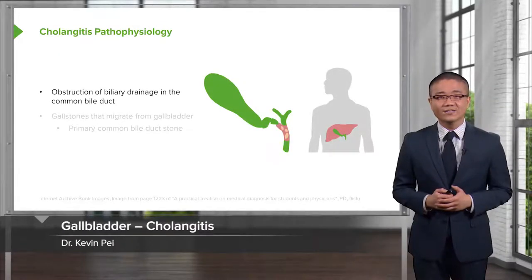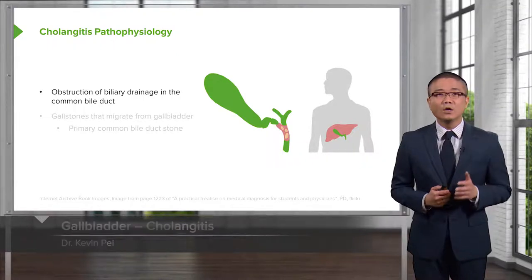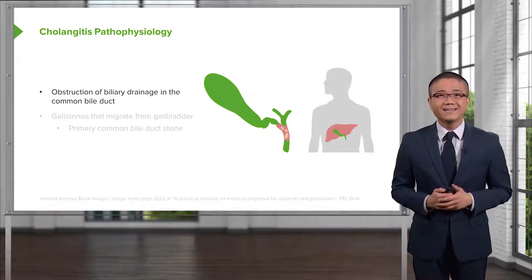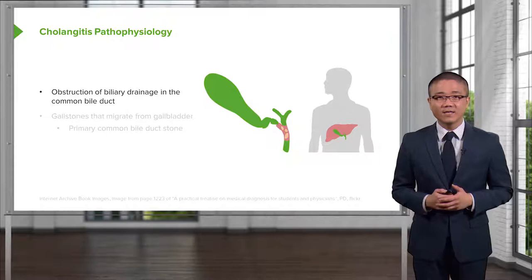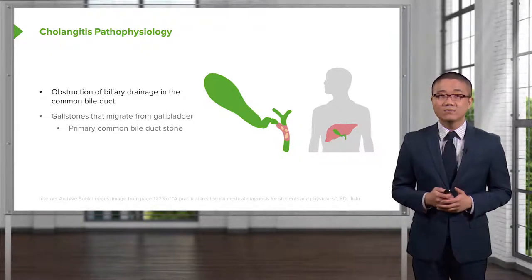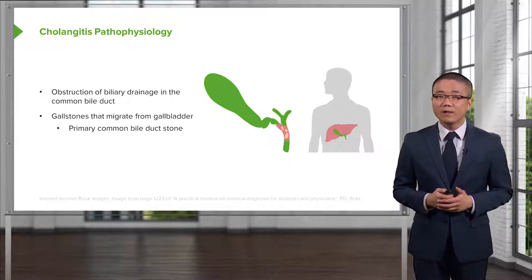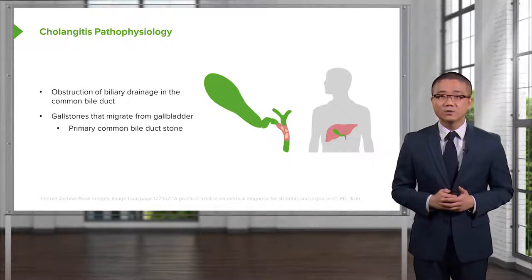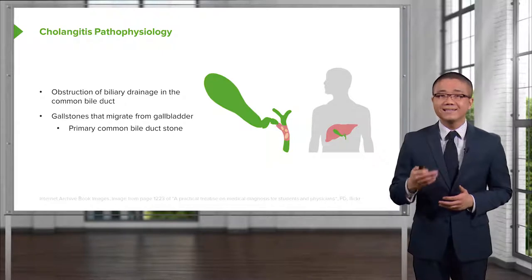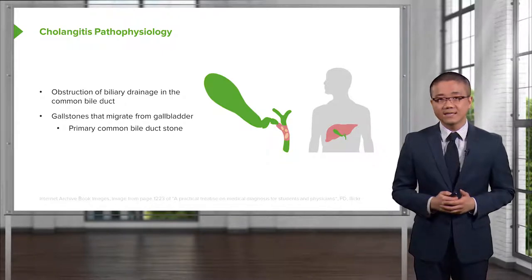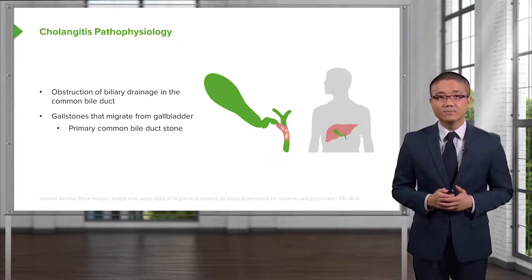Let's move on and discuss cholangitis. Cholangitis results from an obstruction of biliary drainage in the common bile duct. Gallstones that migrate either from the gallbladder or de novo primary common bile duct stones create an obstruction leading to secondary infection of the bile system.